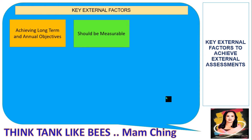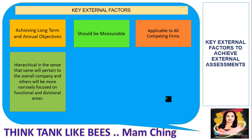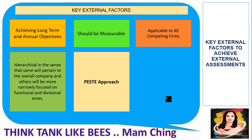Objectives should be measurable and applicable to all competing firms. They are hierarchical in the sense that some pertain to the overall company while others are more narrowly focused on functional and divisional areas. Key external factors also include the PESTE approach and the competitive forces, or Porter's Five Forces model.